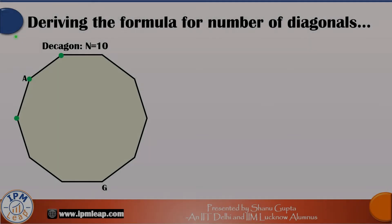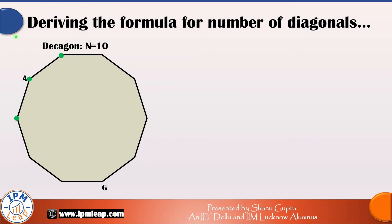To derive the formula for the number of diagonals, let's take a decagon, a polygon with 10 sides. Now first things first, a polygon of n sides will have how many vertices?